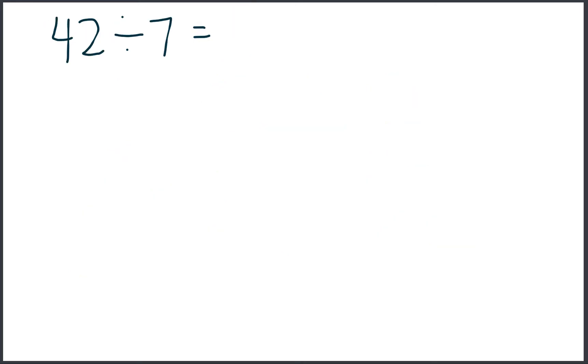Let's try another one. We have 42 divided by 7. Remember, we are taking 42 and dividing it into rows of 7. So let's begin.